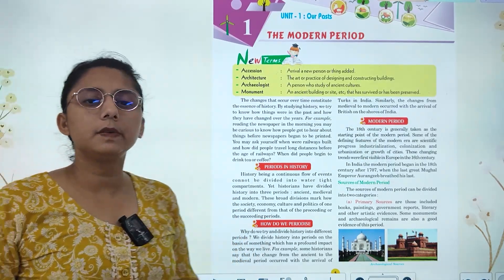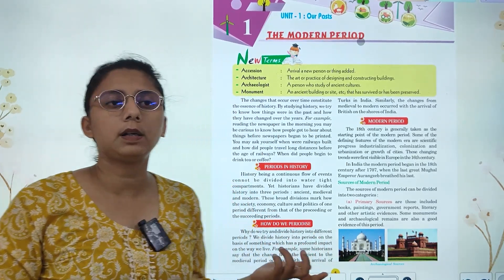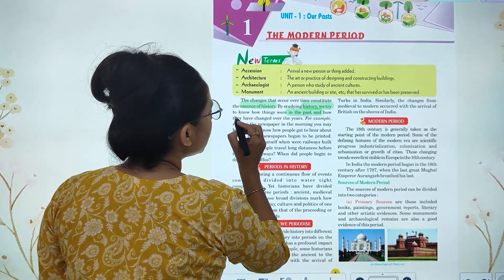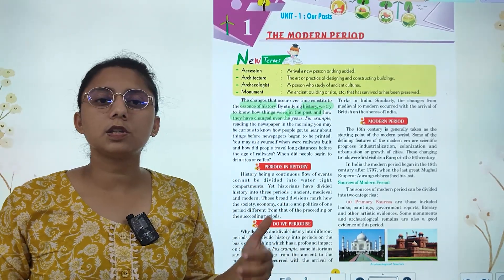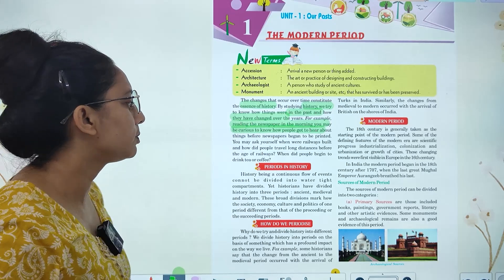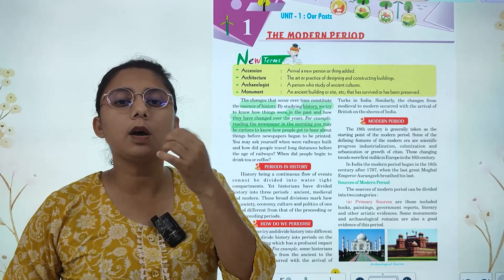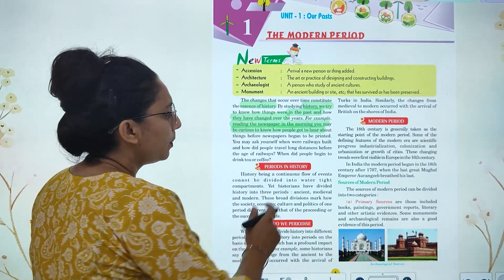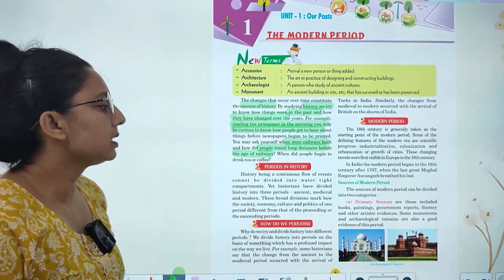Today let's start with Chapter 1: The Modern Period. In this chapter we will study about the modern period and the changes that occur over time. By studying history, we try to know things from the past and how they changed over the years. For example, reading the newspaper in the morning, you may be curious to know how people came to hear about things before newspapers began to print. You may also ask yourself when railways were built and how people traveled long distances before that.